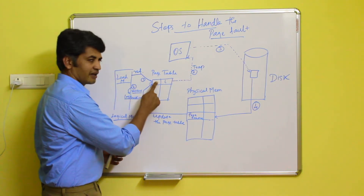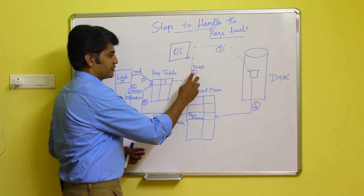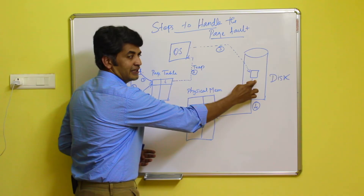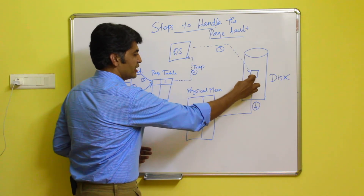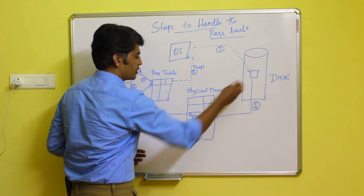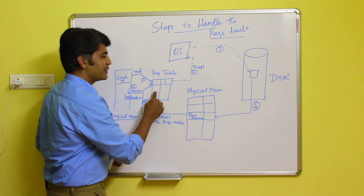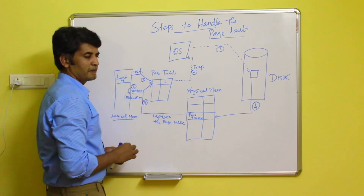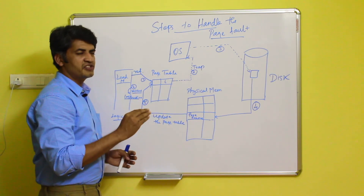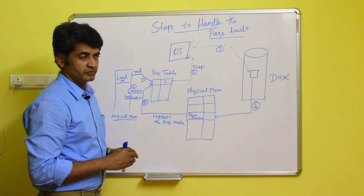There are six steps in handling a page fault. Step 1: refer the page table. Step 2: if the information is not there, generate a trap — the page fault is generated. Step 3: the operating system identifies the page information in the disk. Step 4: a free frame is identified and the page information is transferred to it. Step 5: the frame number is updated in the page table. Step 6: the particular instruction is restarted. This is how the page fault is handled by the operating system.